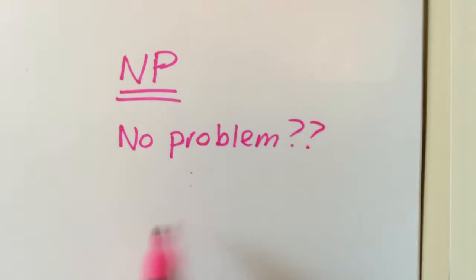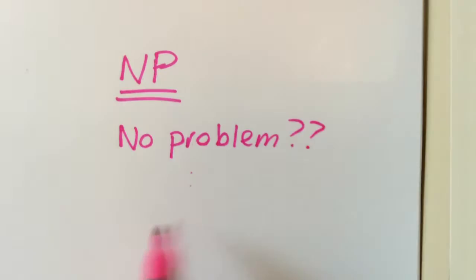Solving a Sudoku of any size is in NP, which definitely doesn't stand for no problem. Being in NP means that if you were to show us a solution to the problem, then it would be relatively easy to check that your solution was correct.